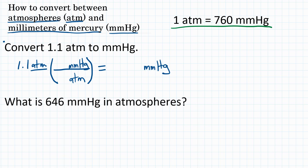So we're going to have one atmosphere on the bottom, because we need atmospheres on the bottom, and 760 millimeters of mercury on top. Looking at our units, atmospheres will cancel because atmospheres is on top of our starting value and on the bottom of our conversion factor. We'll be left with millimeters of mercury, which is the unit we want.